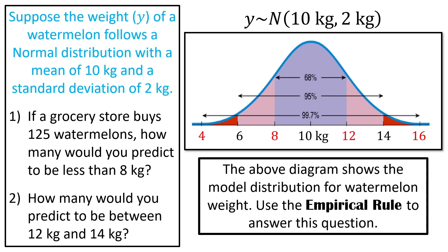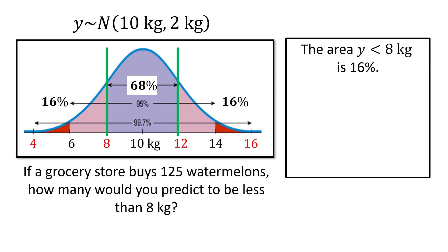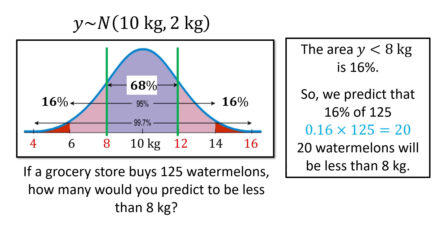We can now use the empirical rule to calculate areas. Areas correspond to probabilities or proportions. For the first question, if a grocery store buys 125 watermelons, how many would you predict to be less than 8 kilograms? The area from 8 kilograms to the left represents 16% of the total area. So 0.16 times 125 gives 20. The answer: 20 watermelons will be less than 8 kilograms — that's our prediction.